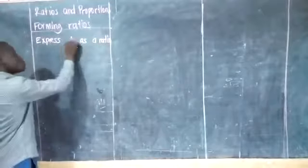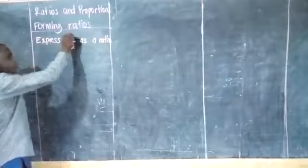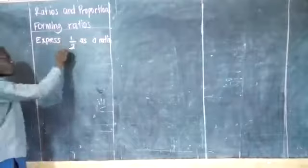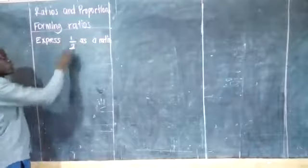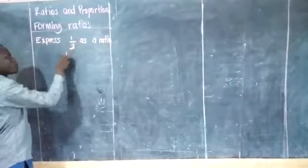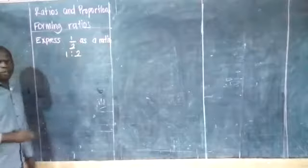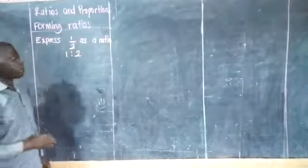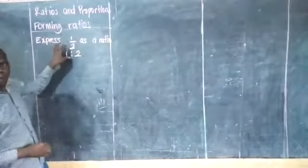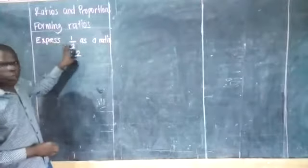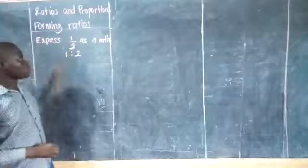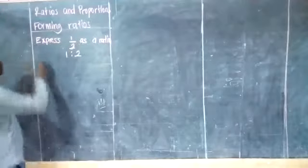The top number will be the first part of the ratio and the bottom number will be the second part of the ratio. So a half in ratio form will be 1 to 2. That is our first example. Example number 2.